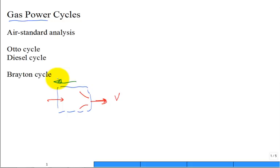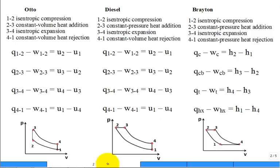You'll talk more in Thermo 2 about jet engines for propulsion systems. Let's summarize again what we need to know. We need to know about the Otto cycle, about the Diesel cycle, and about the Brayton cycle.